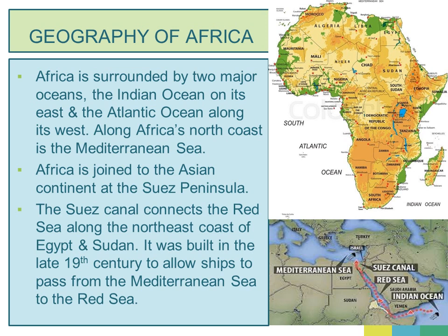Africa is joined to the Asian continent with the help of the Suez Canal. The Suez Canal connects the Red Sea along the north-east coast of Egypt and Sudan. It was built in the 19th century to allow ships to pass from the Mediterranean Sea to the Red Sea and into the Indian Ocean. A canal is always useful in connecting two large water bodies, and it is still helping cargo ships move to and fro very smoothly.